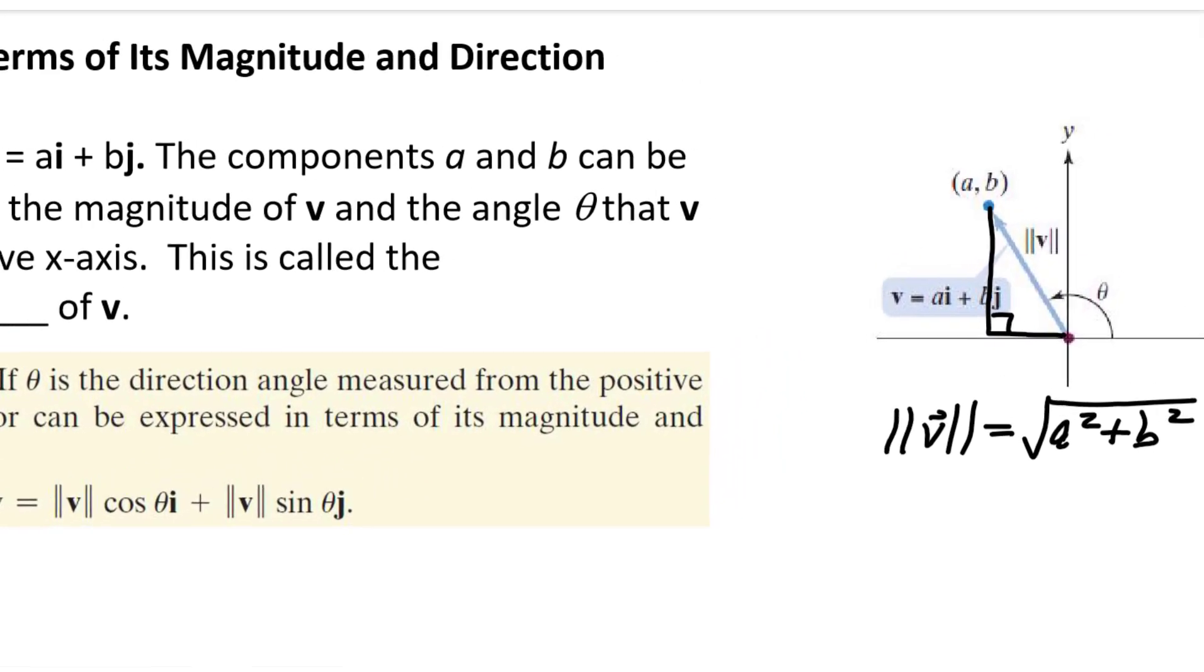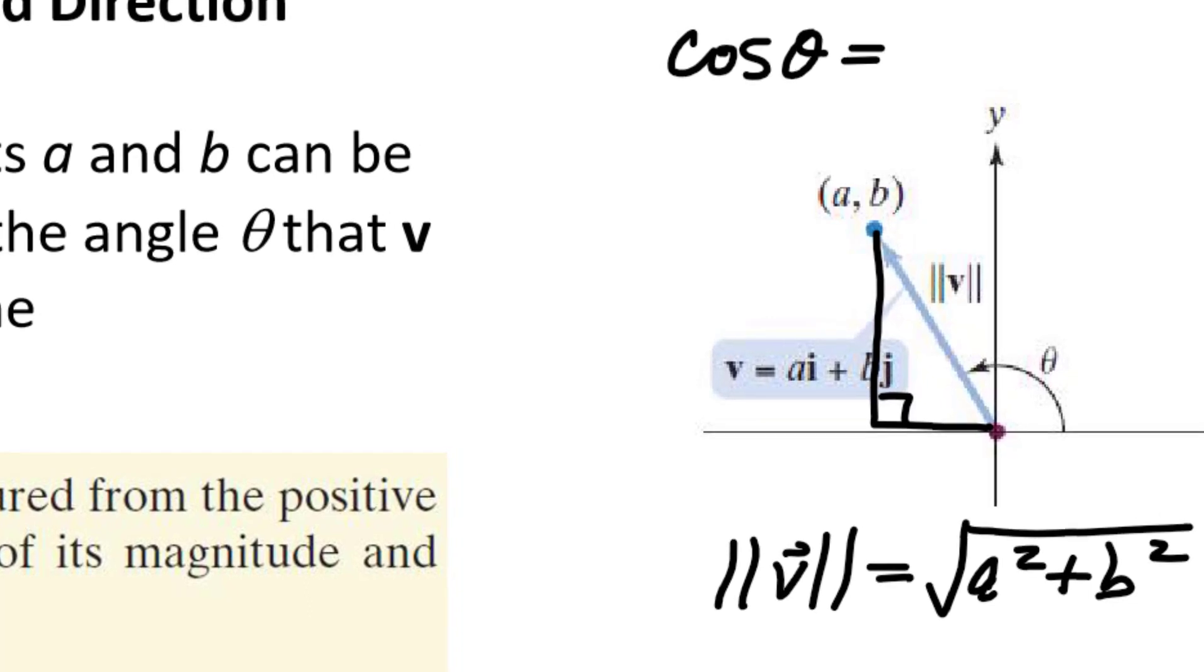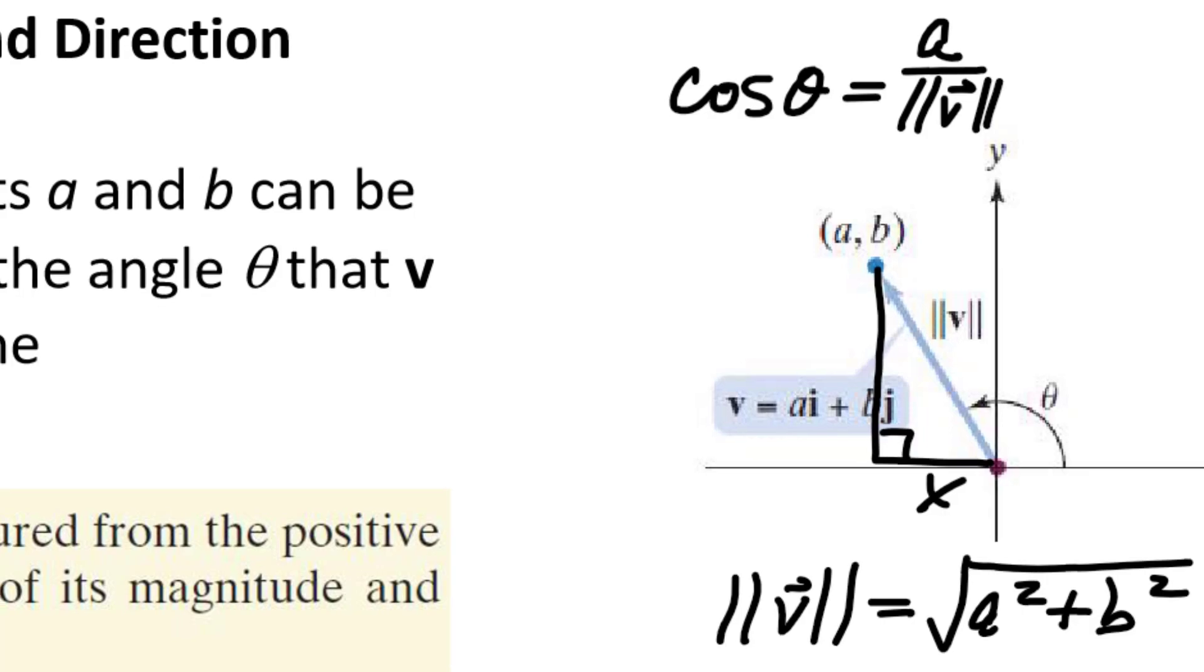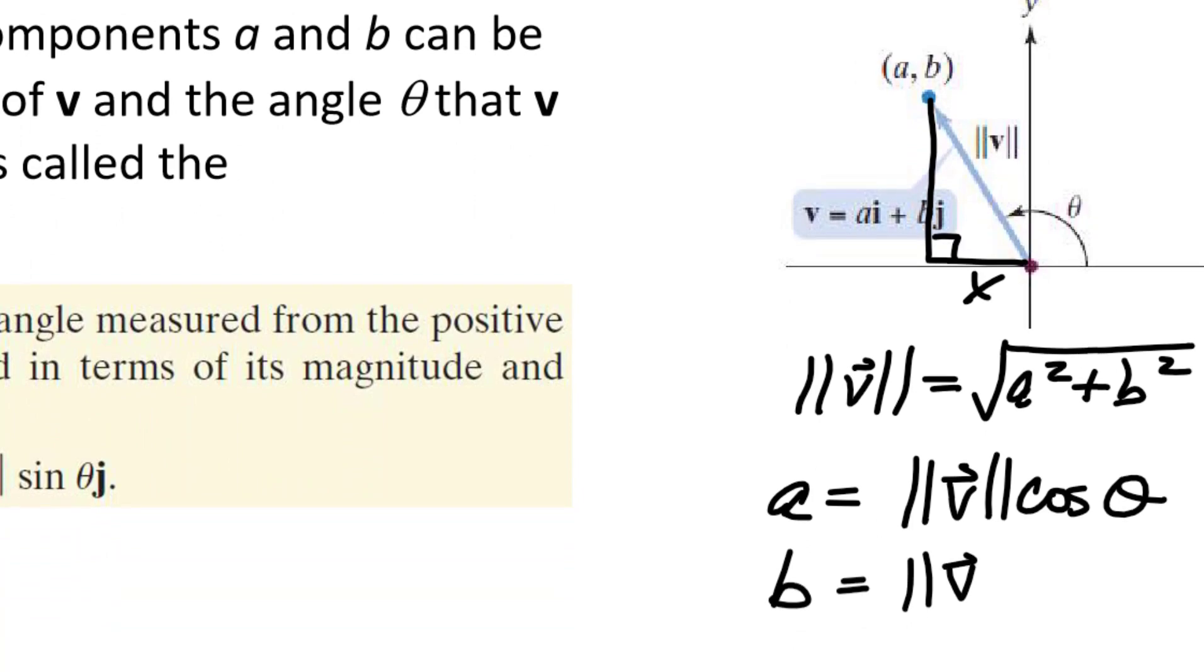Notice that because the magnitude of v is the hypotenuse, the cosine of theta is going to be the x-coordinate, or the adjacent side, over the hypotenuse. In this case, the x-coordinate is going to be a and the hypotenuse is the magnitude of v. So if we rearrange this, we get that a is actually always equal to the magnitude of the vector v times the cosine of theta. And similarly, we can see that b is going to be the magnitude of the vector v times the sine of theta.